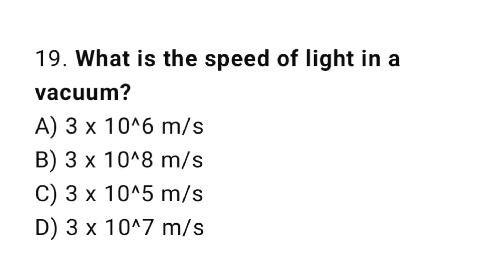Question number 19: What is the speed of light in a vacuum? The correct answer is B, 3 × 10⁸ meters per second.